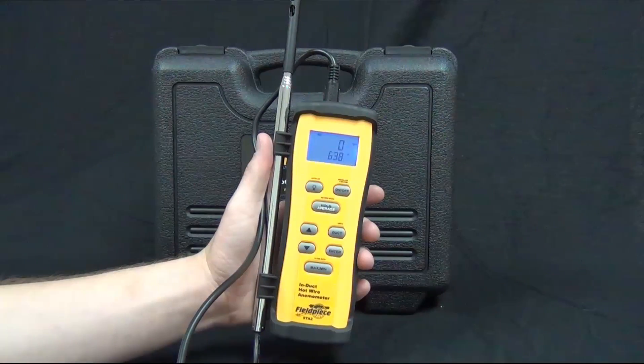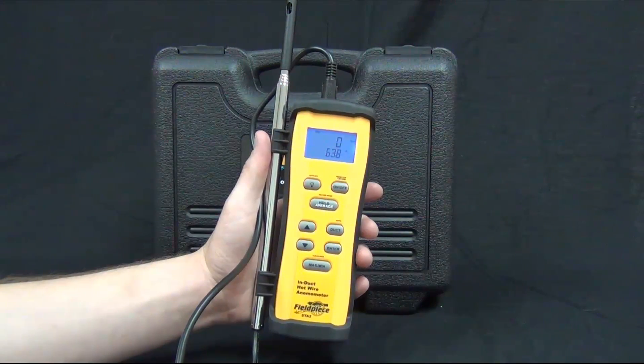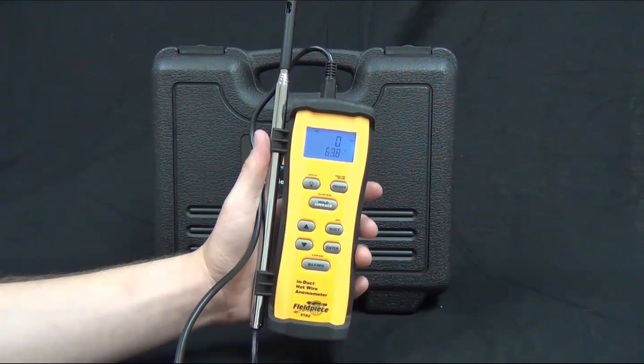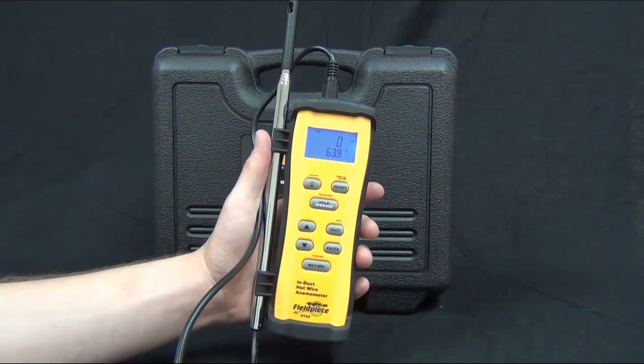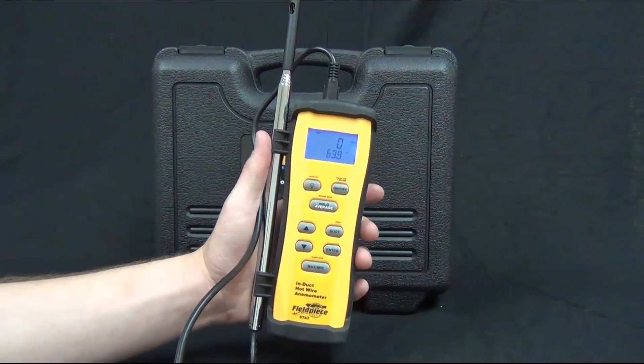Today we're going to talk about Fieldpiece's new STA-2. This is an in-duct hot wire anemometer, and what this allows you to do is to get CFM in the duct.